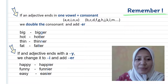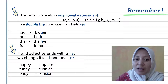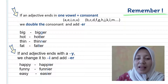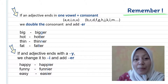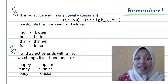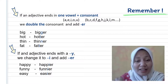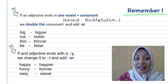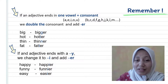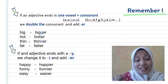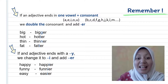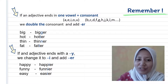Remember: if an adjective ends in one vowel and one consonant, we double the consonant and add -er. For example, 'big' — double the G — becomes 'bigger'; 'hot' becomes 'hotter.' And if an adjective ends with Y, we change the Y to I and add -er: 'happy' becomes 'happier,' 'easy' becomes 'easier,' and so on.